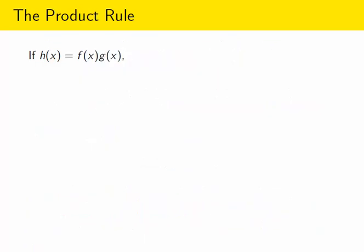So if you are multiplying two functions together to create a more complicated function, you can find the derivative of the resulting function, but it's a little more complicated than just multiplying f prime and g prime together. This is the right formula: you take the derivative of f and multiply that by g, then you take the derivative of g and multiply that by f, and then you add those two results.